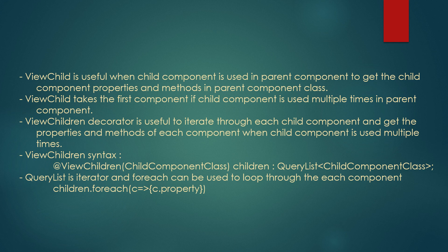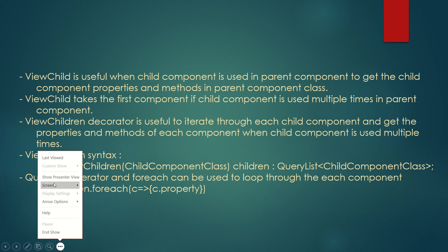We can use the ViewChildren decorator for this purpose. The syntax is: ViewChildren, within the parent, we specify the child component class, then define a property of type QueryList of that child component class. QueryList belongs to the Angular core package and is an iterator, so a forEach loop can be used to loop through each component in the parent component class. Let us understand this with a simple example program.